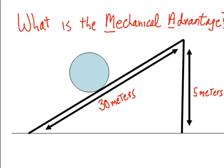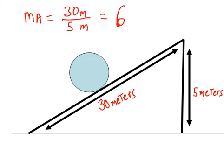What is the mechanical advantage? The mechanical advantage is 30 meters over 5 meters, slope over the 5 meters the height, and that gives us 6.